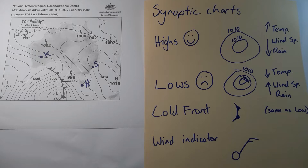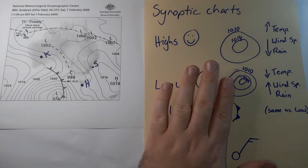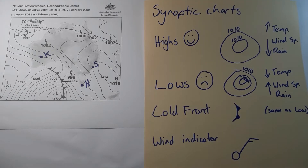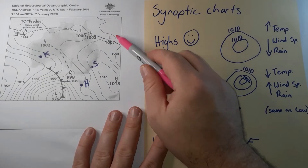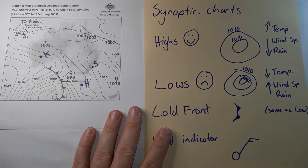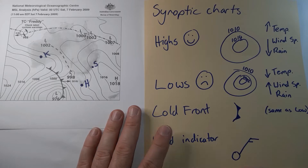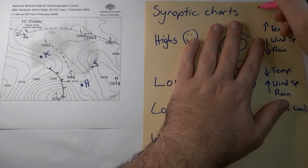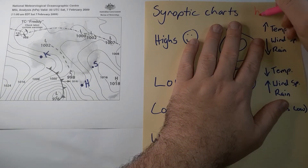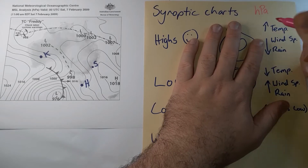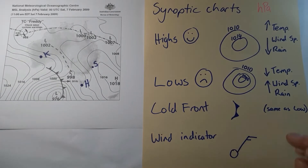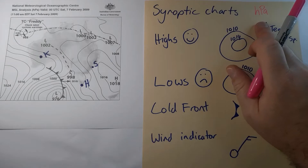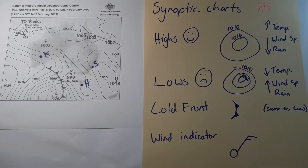The first feature — not explicitly listed but important — are the lines themselves. We call these isobars. Isobars join places of equal air pressure, so any point on the same line has the same air pressure. The unit of measurement we use for air pressure is hPa, hectopascals. Whenever you're asked about air pressure, that's the unit of measurement to include.